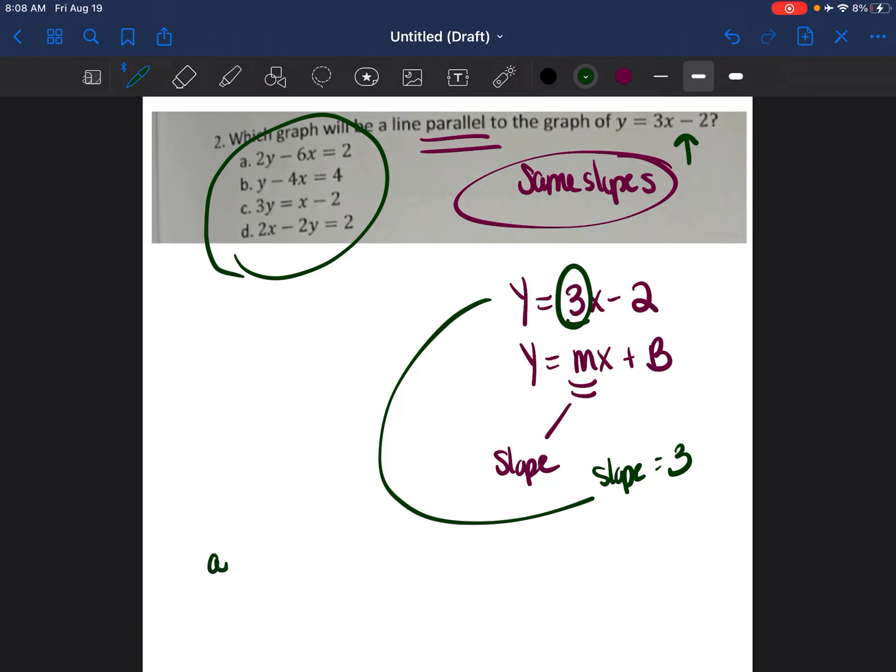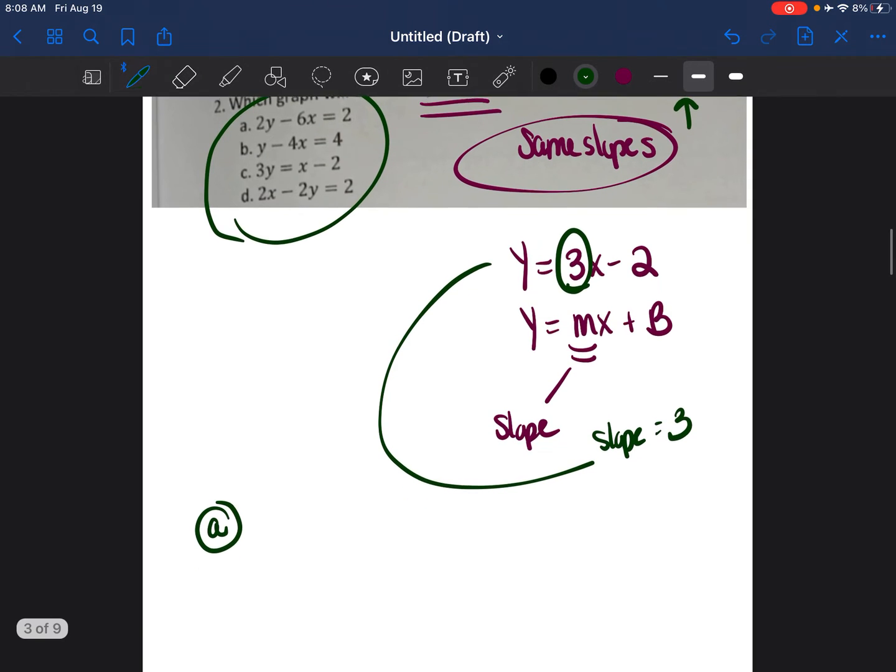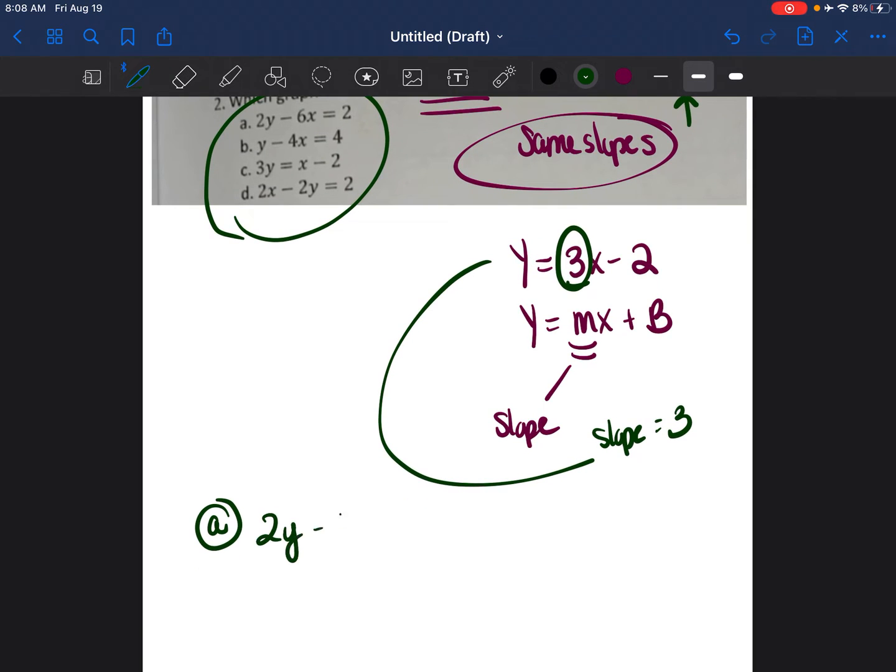So I'm going to start with option A. 2Y minus 6X equals 2. And I'm going to try to see if I rewrite this into the same form, find what the slope is. Does it have the same slope as our original equation? So I want this equation to look just like this equation. That means I need to get the X on the other side. I'm going to add 6X to both sides. And I have 2Y is equal to 6X plus 2.